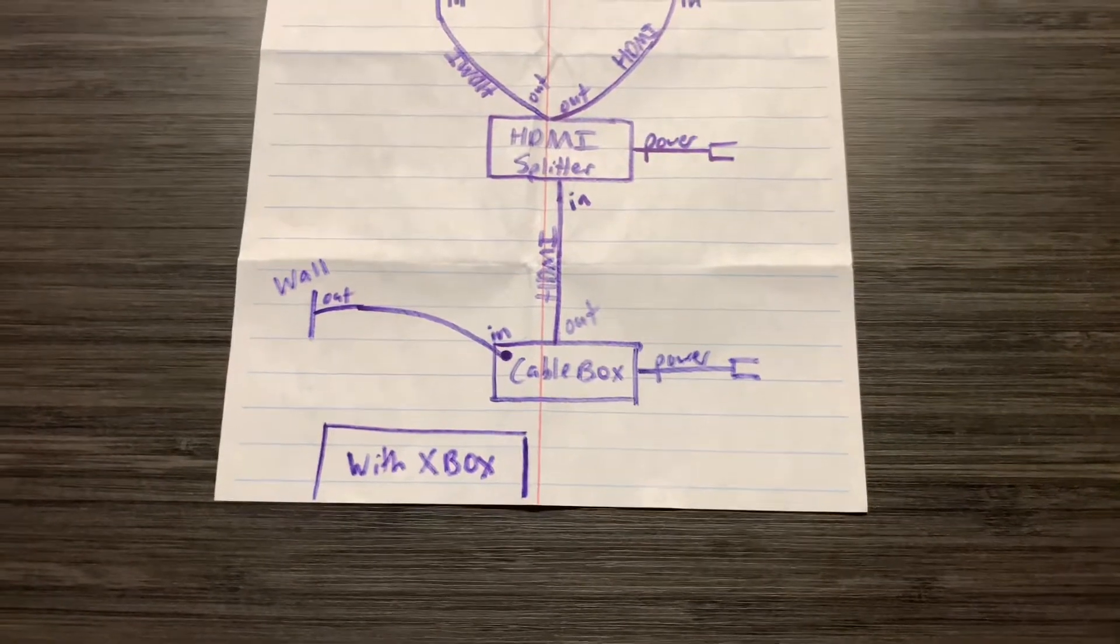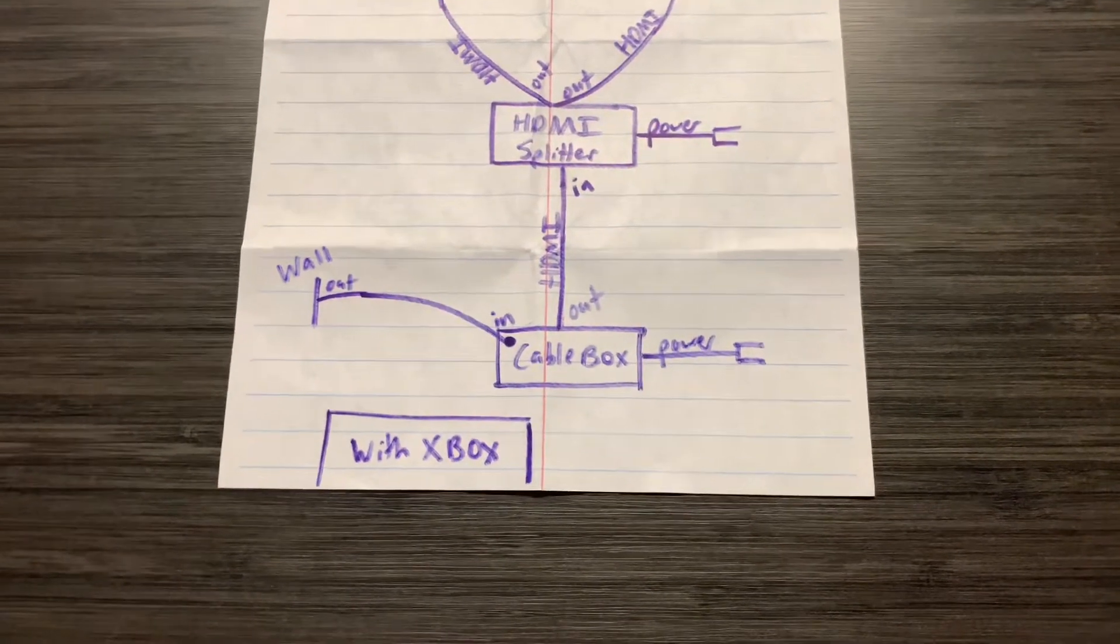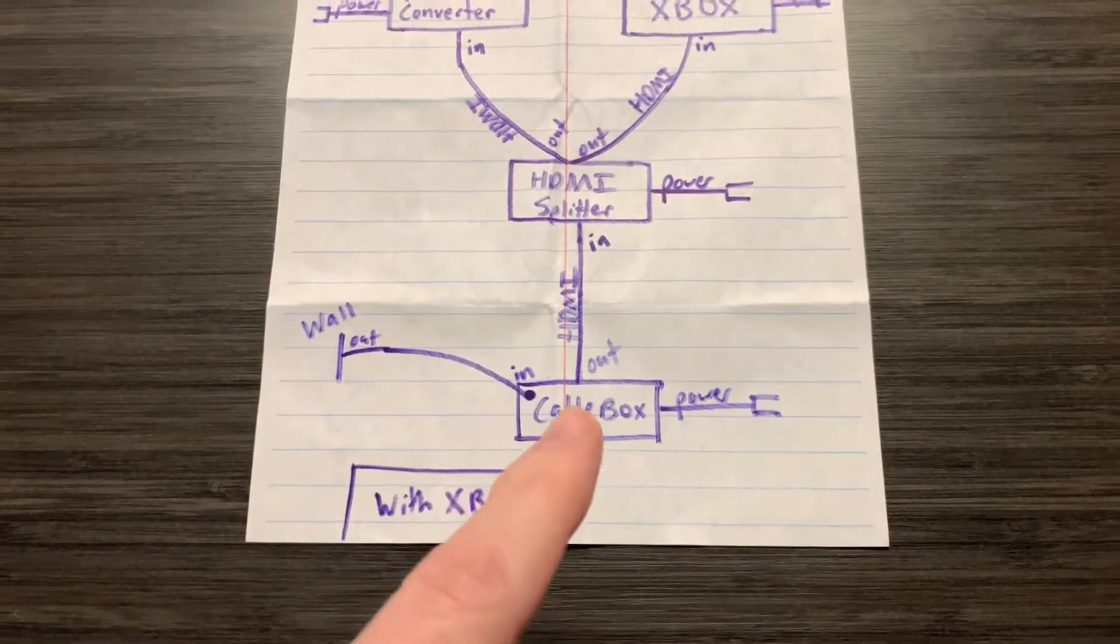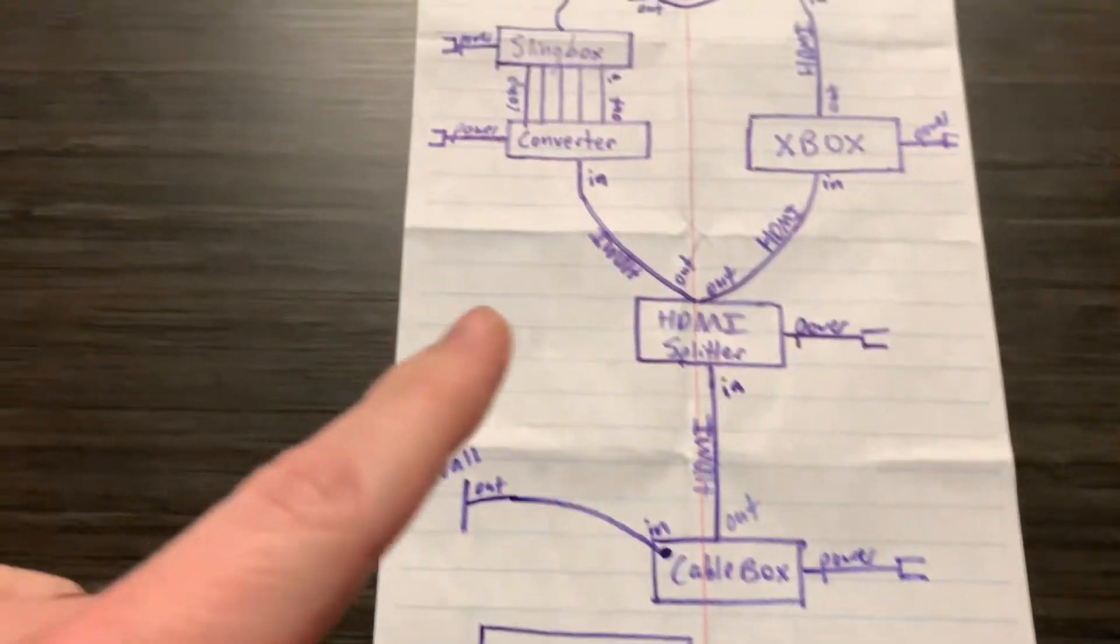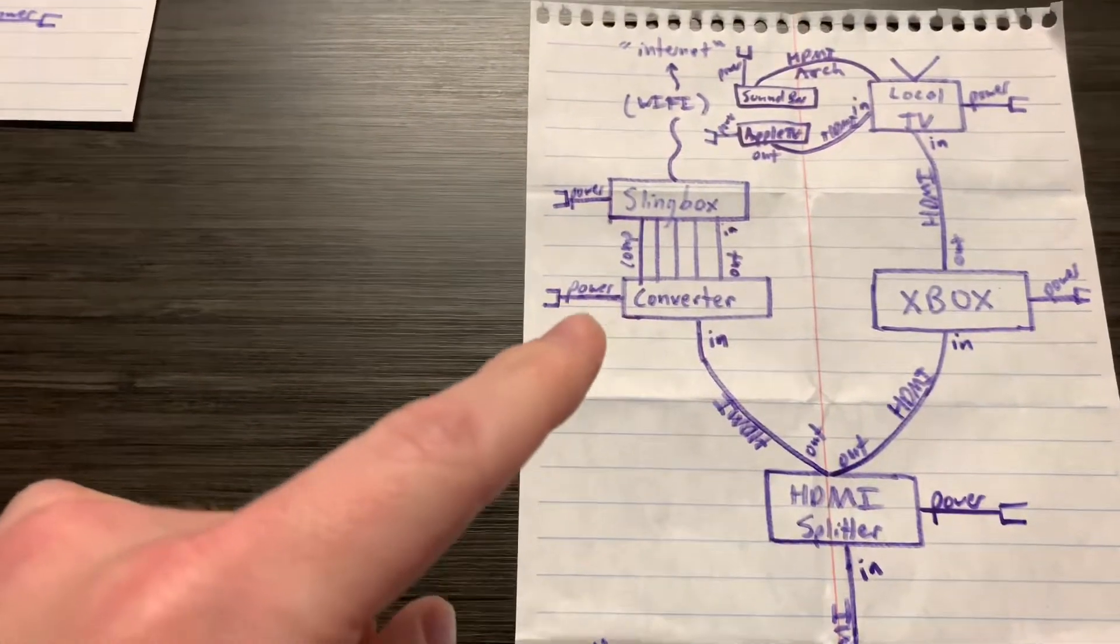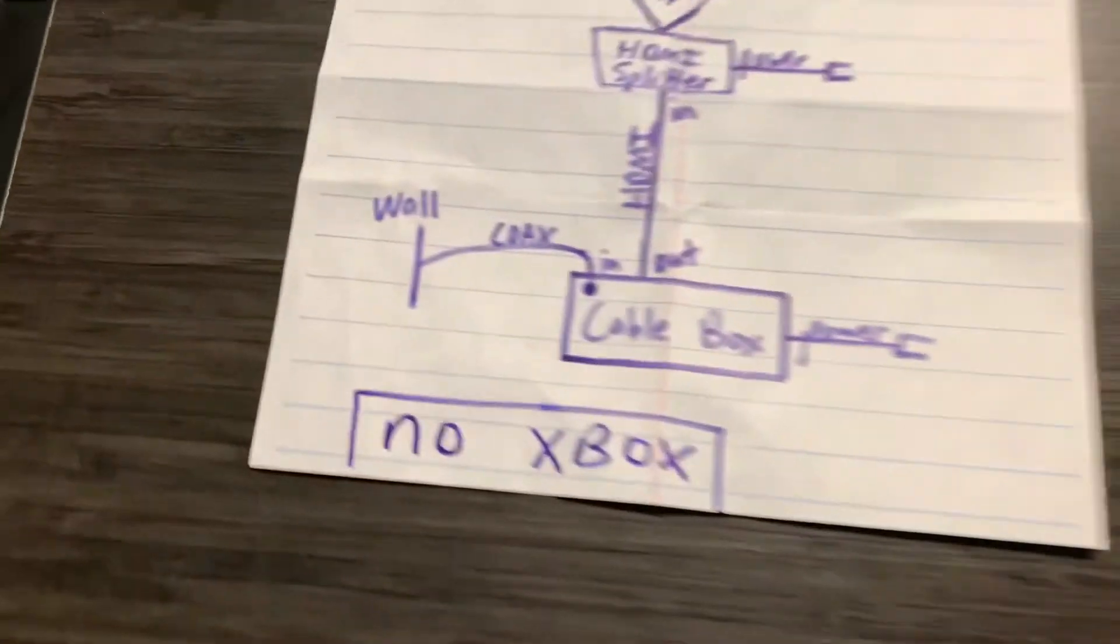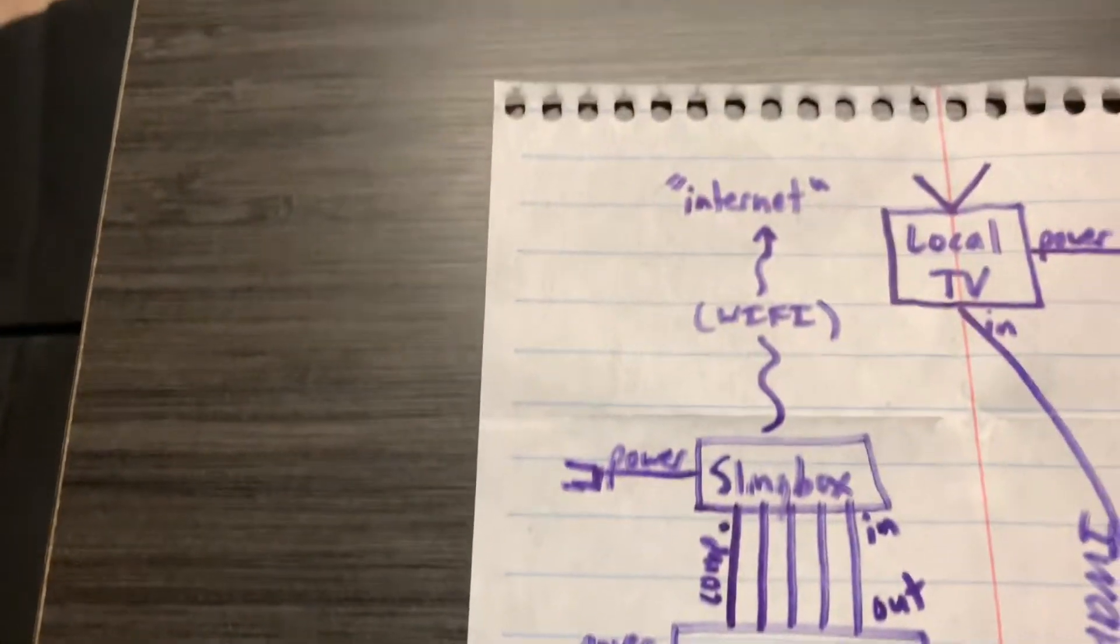So this is actually how I have mine set up at home with my Xbox. Now everything is exactly the same here all the way until the HDMI splitter. It's also the same here on the left side with the converter and the Slingbox up to the WiFi and the internet, just like in our previous model here on the left.